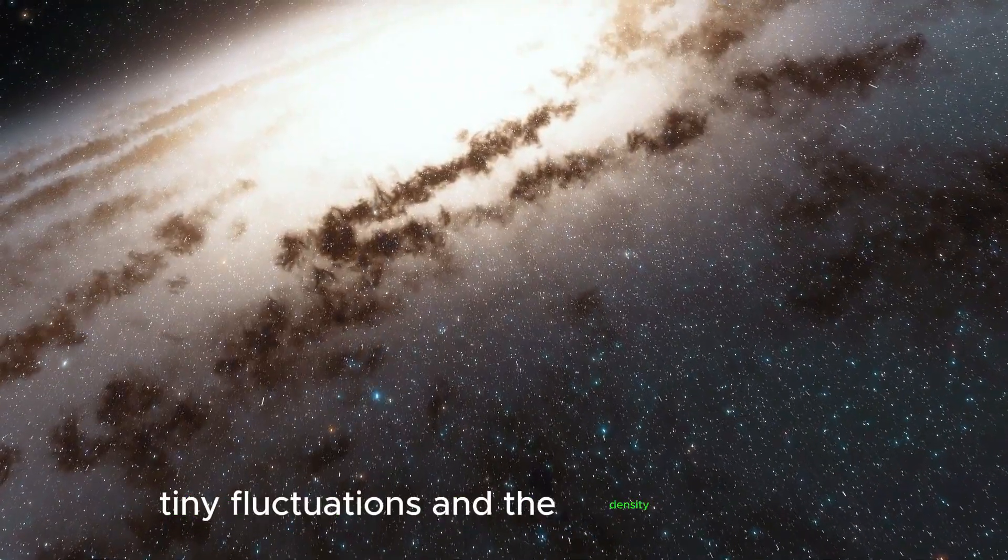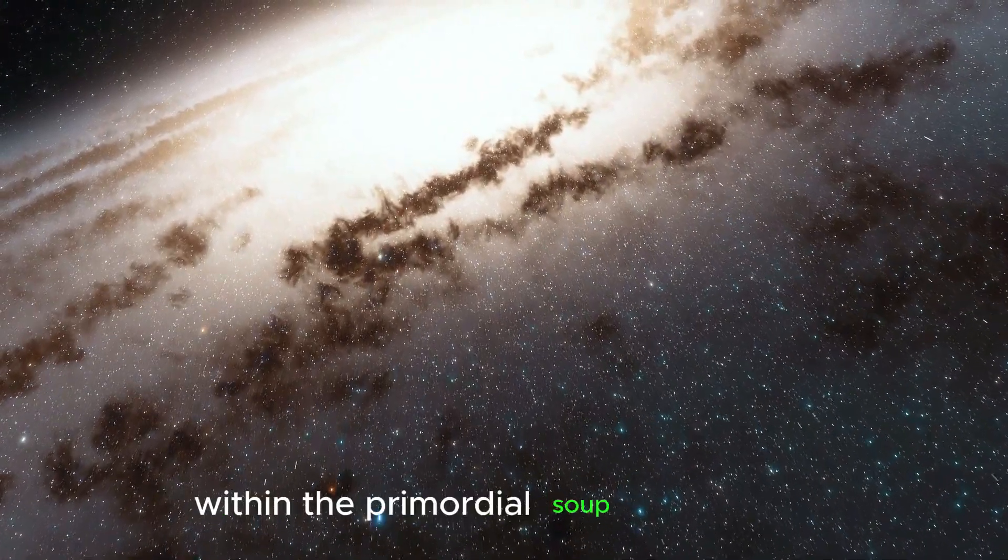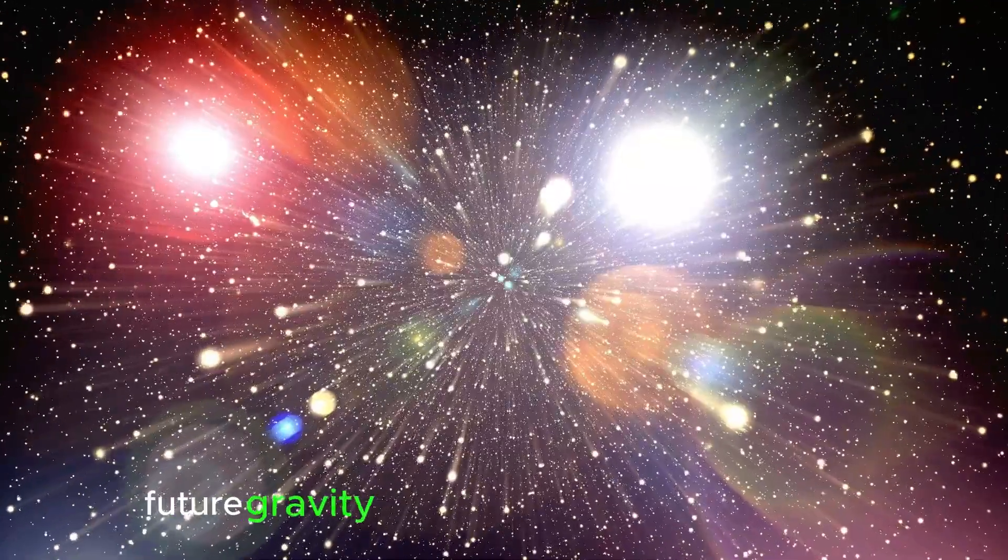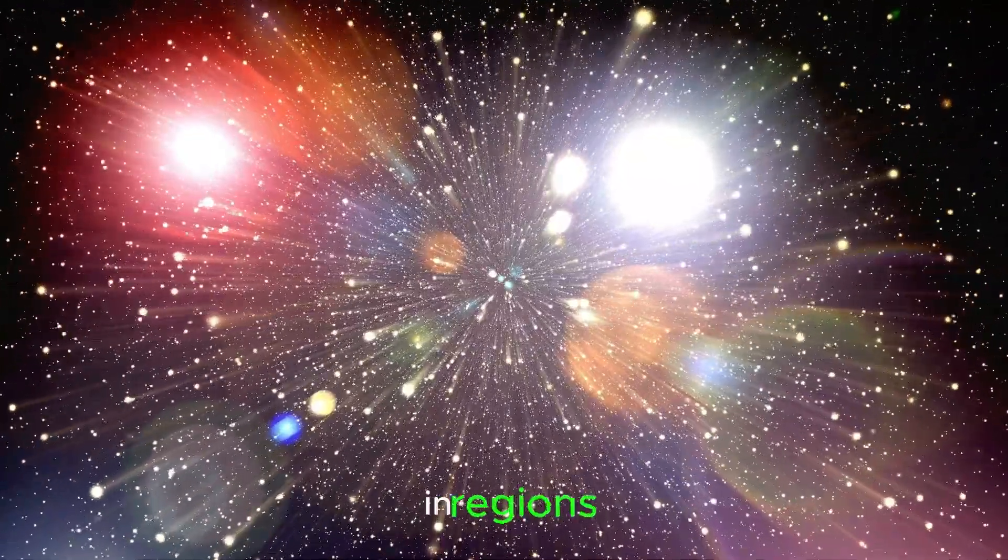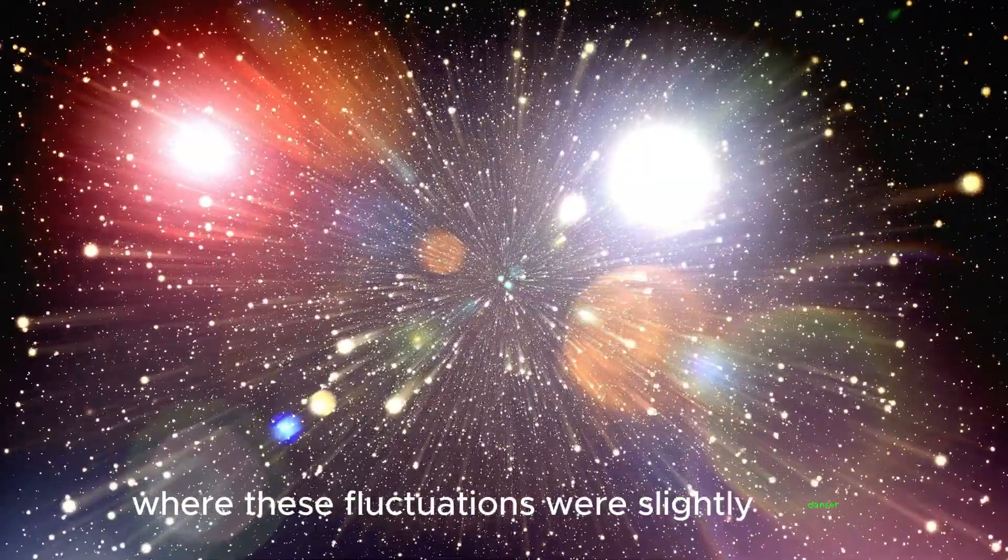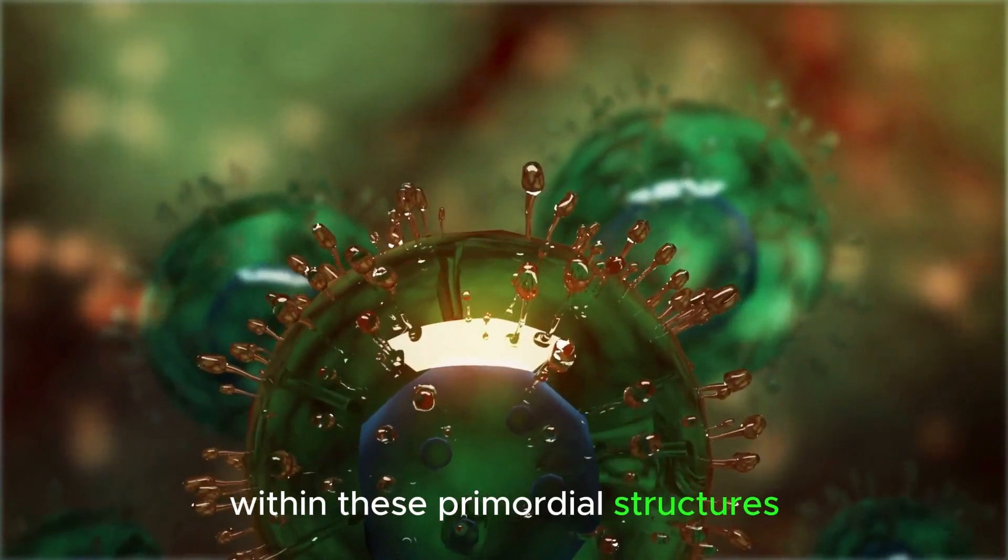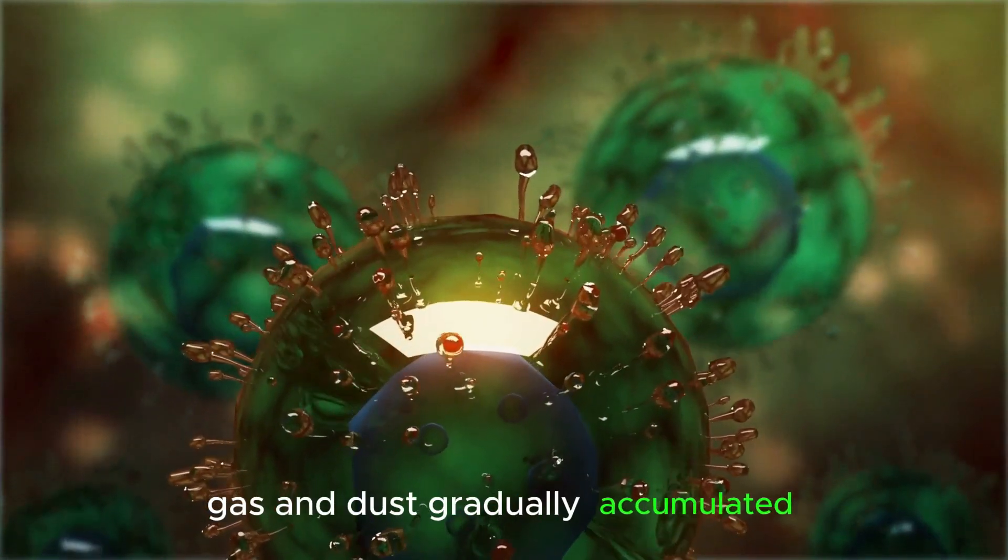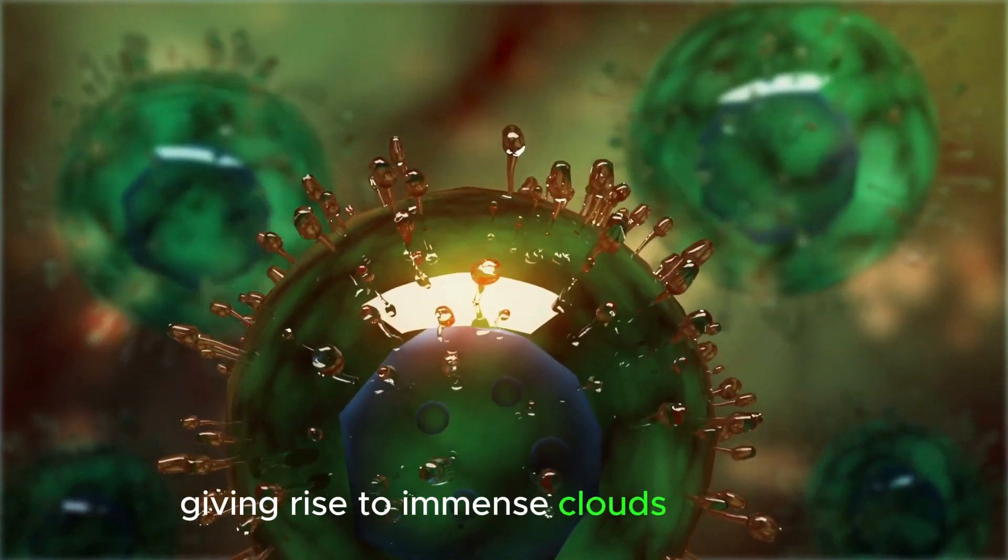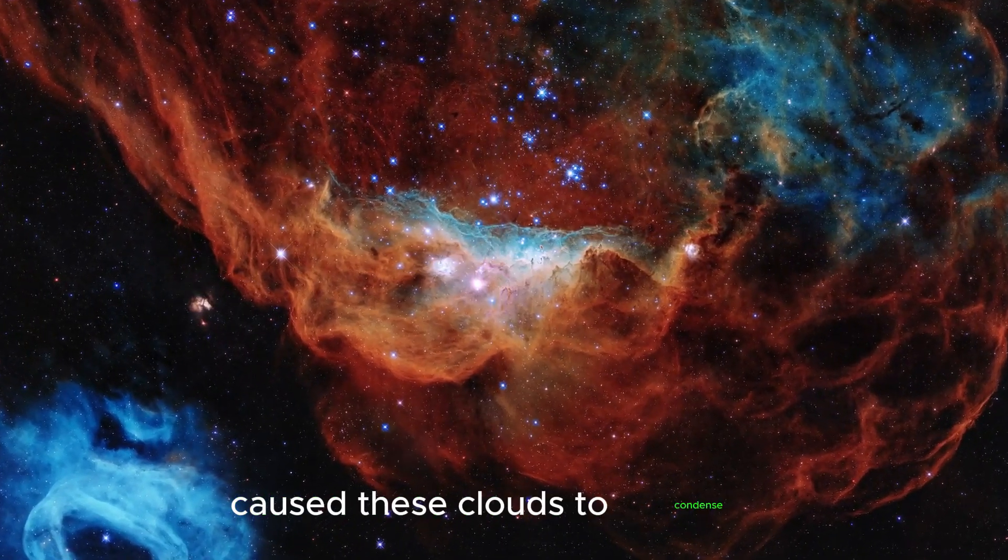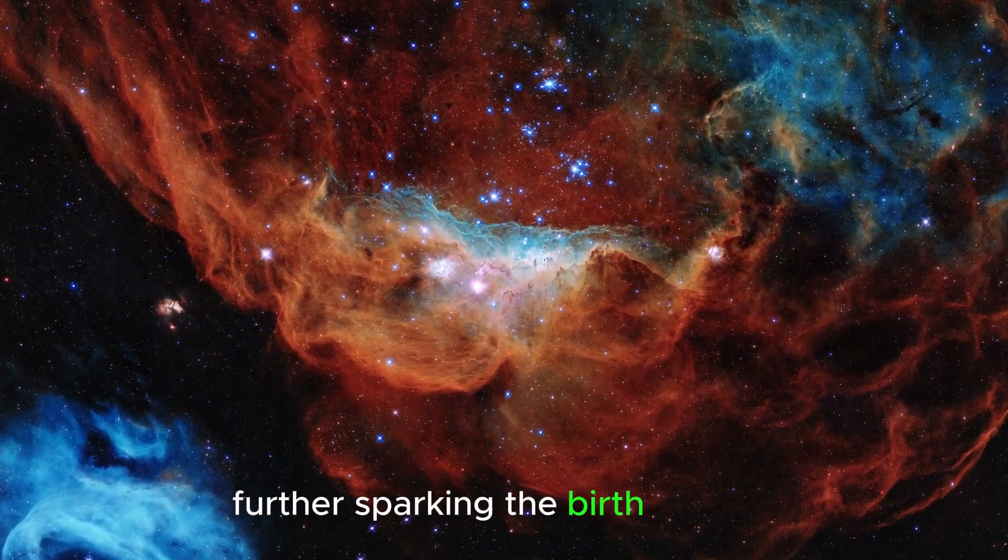Tiny fluctuations in the density of matter within the primordial soup carried profound implications for the future. Gravity gently pulled matter together in regions where these fluctuations were slightly denser, laying the cosmic groundwork for the formation of galaxies. Within these primordial structures, gas and dust gradually accumulated, giving rise to immense clouds of matter. The relentless pull of gravity caused these clouds to condense further, sparking the birth of stars.